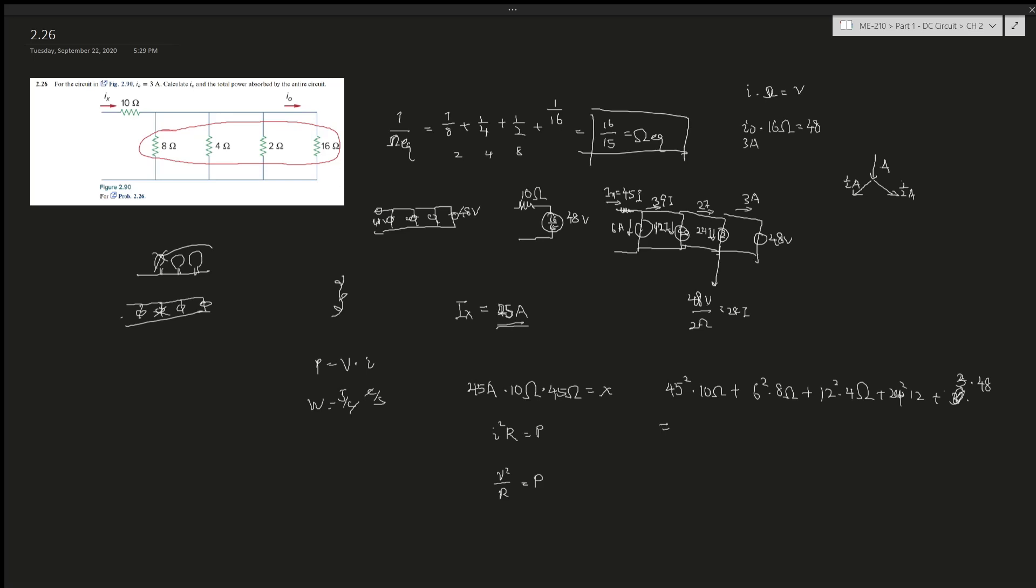You can skip to the end if you're just checking the answers. Let me type everything into the calculator. In the end, you should get 22,410 joules per second, which is 22.41 kilowatts.